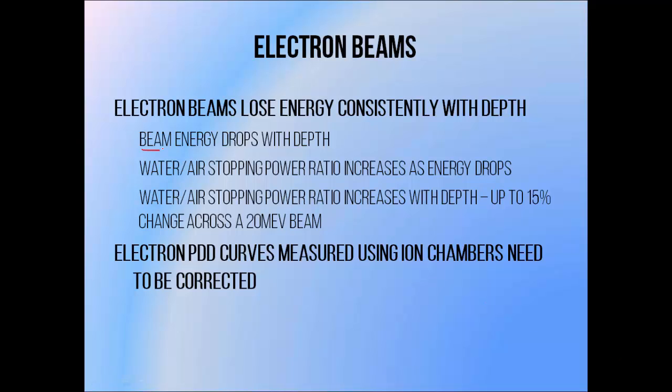Electron beams, on the other hand, lose energy consistently with depth, and the water-to-air stopping power ratio increases as energy drops. So the stopping power ratio increases with depth. The magnitude of the variation depends on the beam energy. Since a higher energy beam starts with more energy, and loses more in total across its range as it travels, the total variation in stopping power ratio tends to be greater, up to around about 15% across a 20 MeV beam.